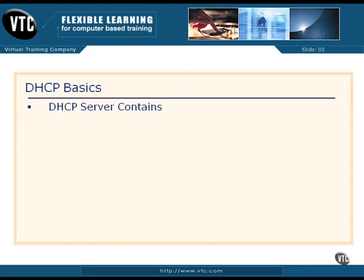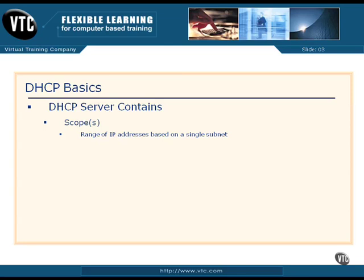A DHCP server is essentially a list or small database of addresses that can be given out to clients. These addresses are arranged in scopes — there can be one or more scopes on a DHCP server. A scope is simply a range of IP addresses based on a single subnet, for example 15.1.0.0 to 15.1.0.255. Along with addresses, the server can also provide subnet masks, default gateway information, and subnet type details.